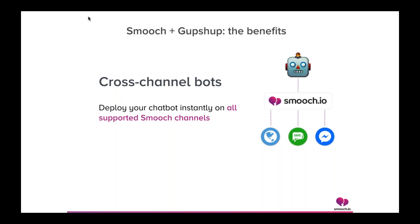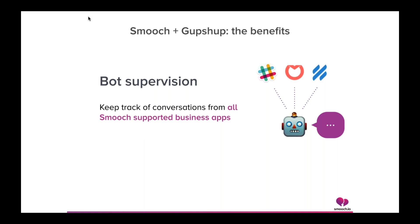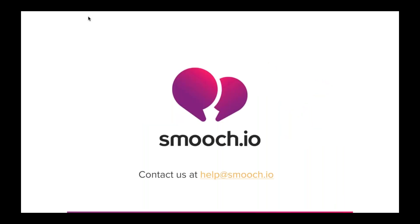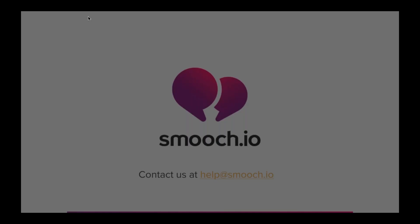The benefits of using Smooch and GupShop together: the first is cross-channel bots. For every supported Smooch channel, you can deploy your bot. In addition to GupShop's existing channels, Smooch adds channels like web and iOS. Another benefit is bot supervision — you can keep track of the conversations the bot is having with your users, and a future feature could be to enter the conversation as a human. So I'll give it back to Sohan.